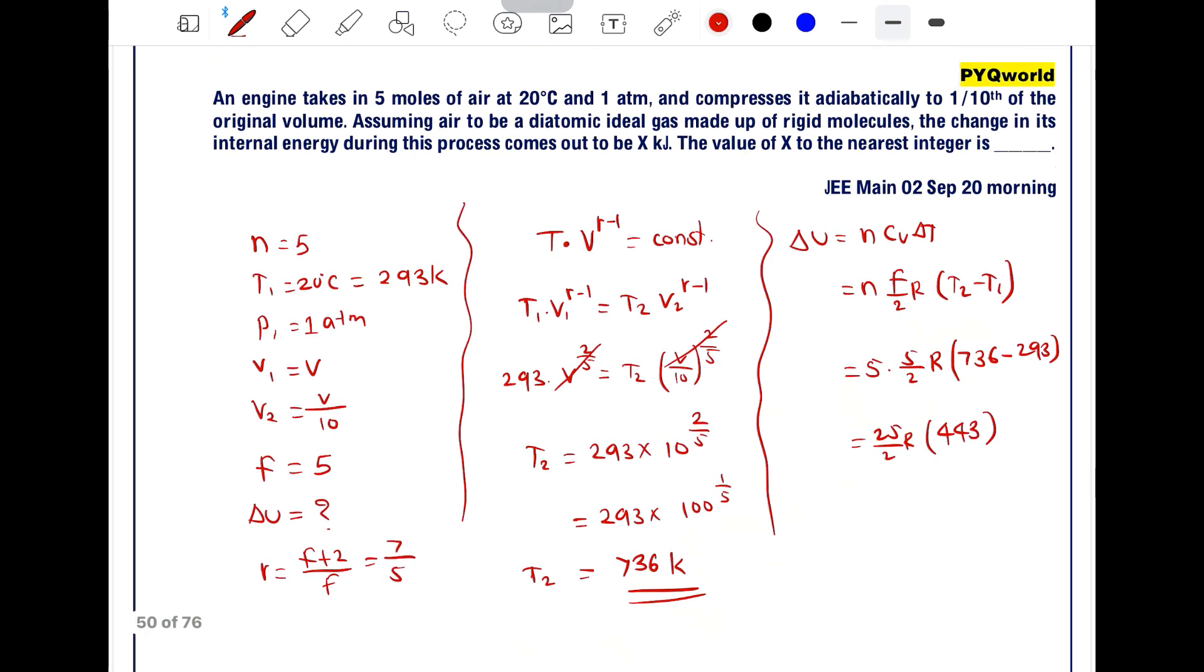The change in internal energy during this process comes out to be X kilojoules. Calculating (25/2) × 443 × R, where R = 8.314 J/(mol·K), we get 46 kilojoules. So the answer is 46.